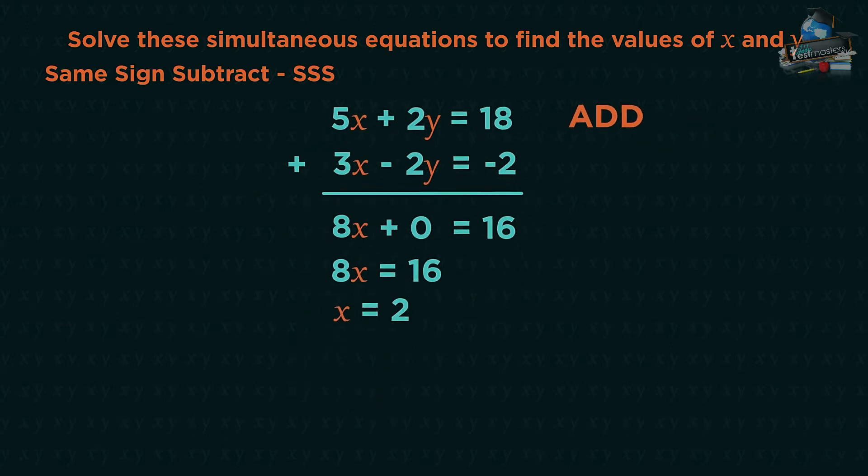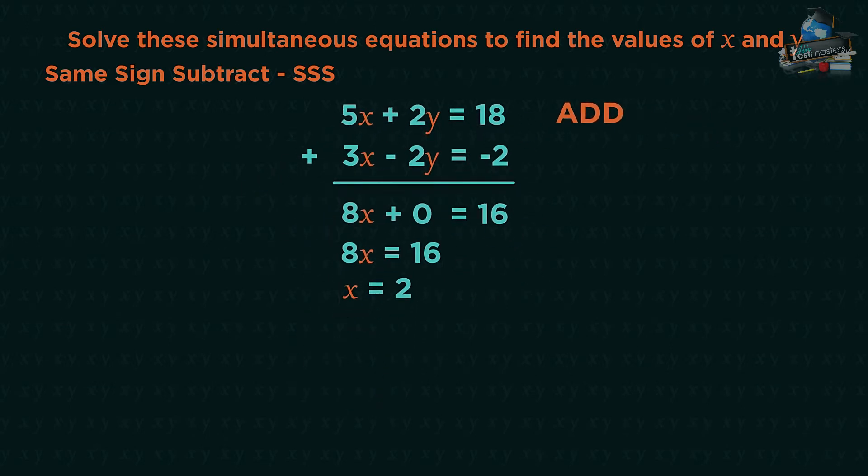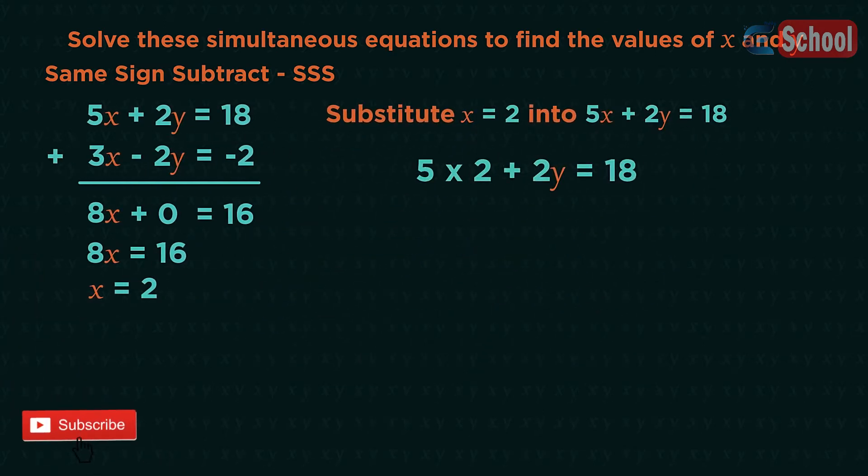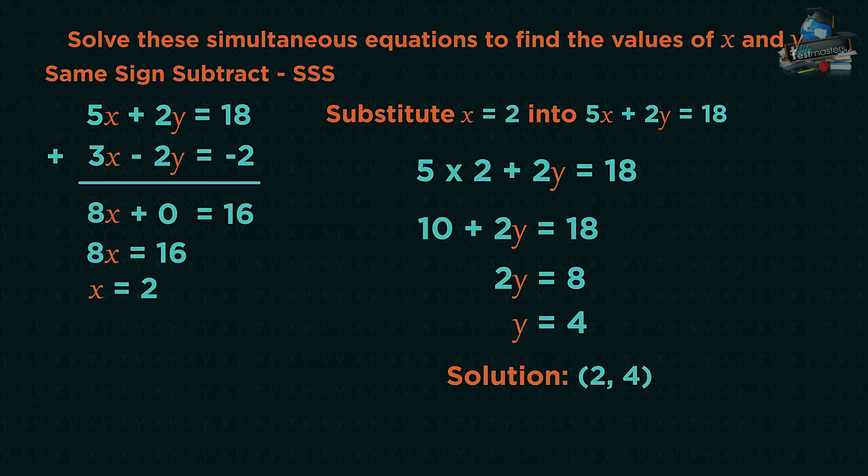Now we need to find the corresponding y value. Choose either one of the starting equations, so I'm going to choose the top one. Substitute x is 2 into this equation: 5 times 2 add 2y equals 18, and solve the equation. 2y equals 8, y equals 4. So when x is 2, y is 4.